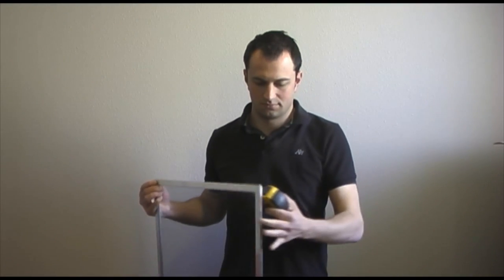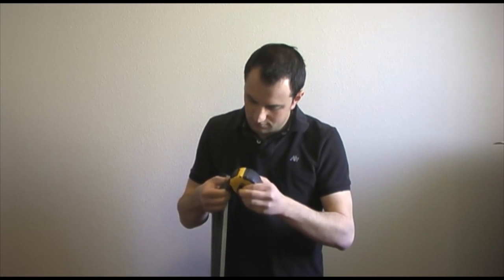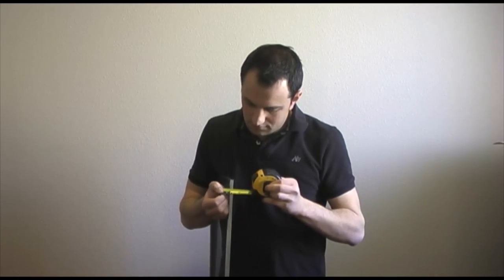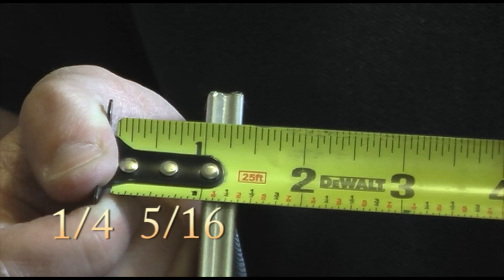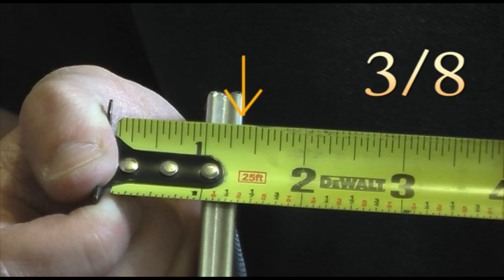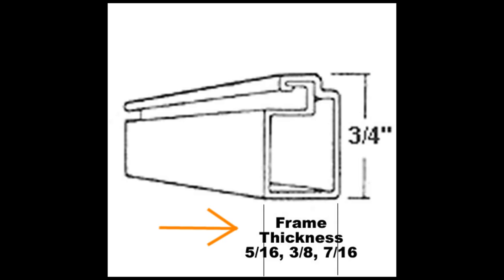Now turn your screen sideways in order to measure the frame thickness. Our frame thicknesses are one quarter, five sixteenths, three eighths and seven sixteenths. This particular screen frame is three eighths. The frame thickness is always the side measurement, while three quarters is the standard front or width measurement.